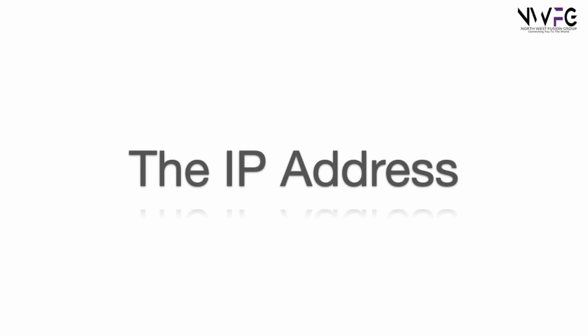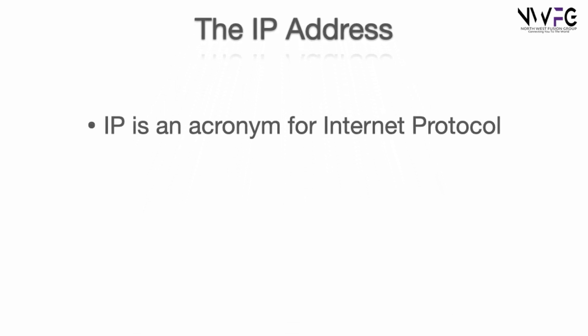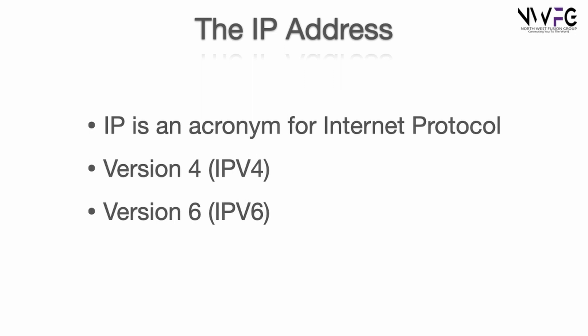Before I go into any depth about routers, it's important to understand the concept of an IP address. The whole internet depends on the IP address to route information, in exactly the same way telephones have numbers. IP stands for Internet Protocol and there are two versions of IP addressing: version 4, also known as IPv4, and version 6, also known as IPv6. The reason for the new version is the limitation on addresses available. IPv4 was expected to provide far more than was ever needed, but as the internet expanded and more devices came online, more addresses were needed and IPv6 was created to ensure we don't run out. For the purposes of this video, we'll concentrate on IPv4.